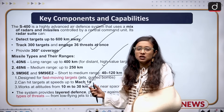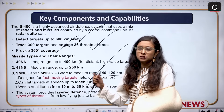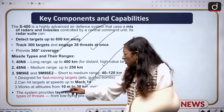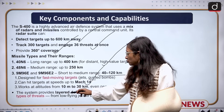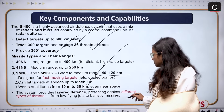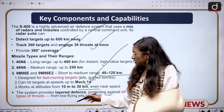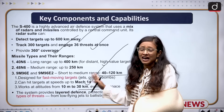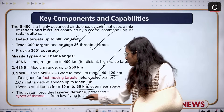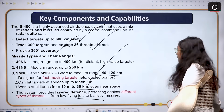Mach here is a measurement of speed especially used for aircraft. The system works at altitudes ranging from 10 meters to 30 kilometers, even near space. This provides a layered defense system with the capacity to deal with different kinds of threats, from low-flying jets to ballistic missiles.